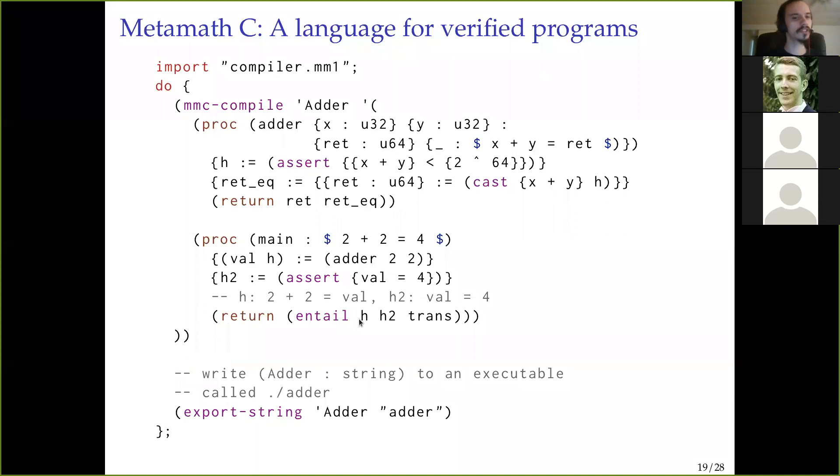And then it also produces a proof that 2 plus 2 equals that value. So now we assert that value equals 4. So we get this. And then we just compose them by transitivity, and we return a proof of 2 plus 2 equals 4. So this is what this actually looks like in the outer language here, where you see the import and the do. That's MetaMath 1. And then inside this do block, we have that Lispy language where we can write programs.